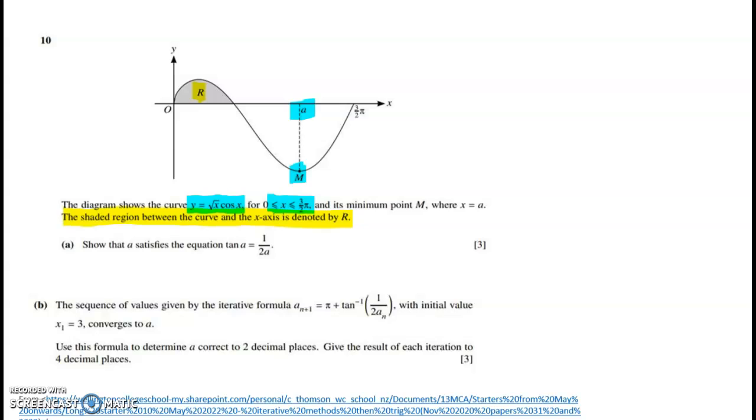So we have to show that a satisfies the equation tan a is equal to 1 over 2a. So what we're really being asked to do here is just to figure out where is the minimum and what is the x coordinate. And then once we've figured out that that minimum is going to happen when this is true, we realize that we can't solve that analytically.